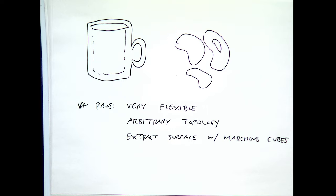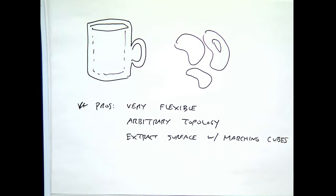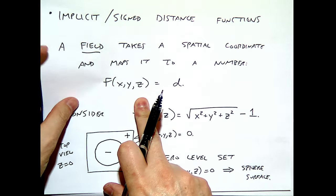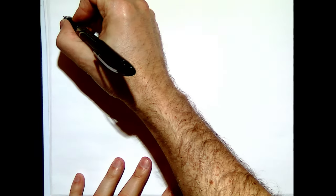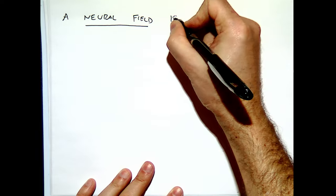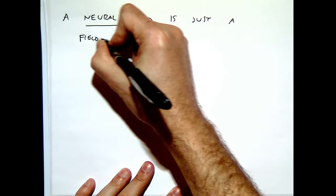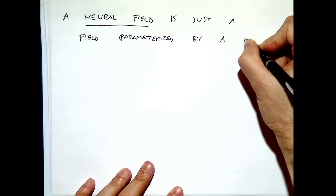So those four things — voxel grid, point cloud, mesh, and implicit function — are classical ways of representing 3D shapes. The next innovation was called neural fields. A neural field is fundamentally a function that is parameterized by some sort of complicated neural network. My F is not easy to write down analytically — a neural field is just a field parameterized by a neural network.